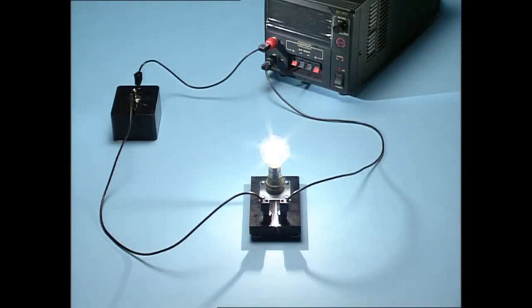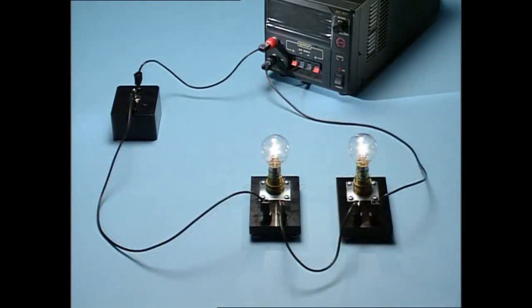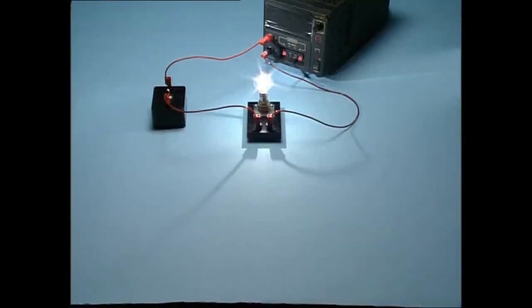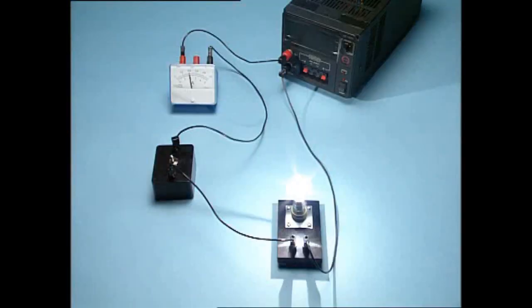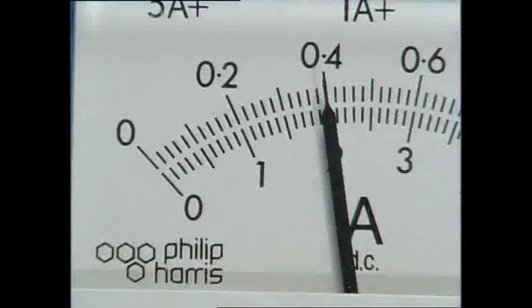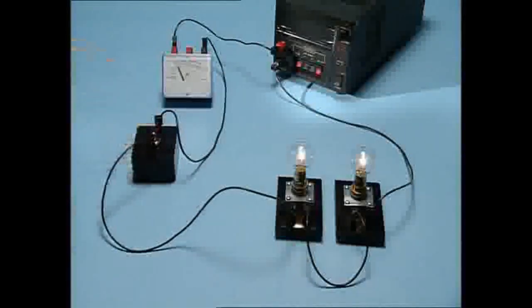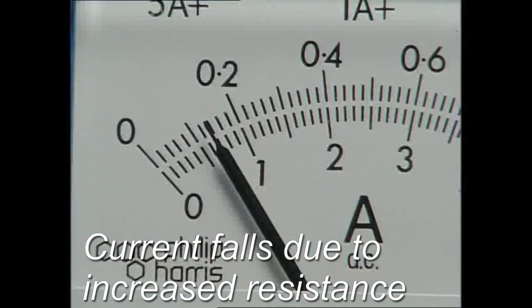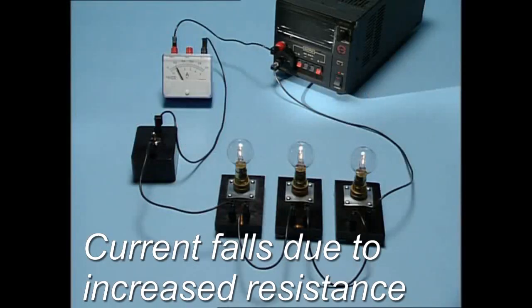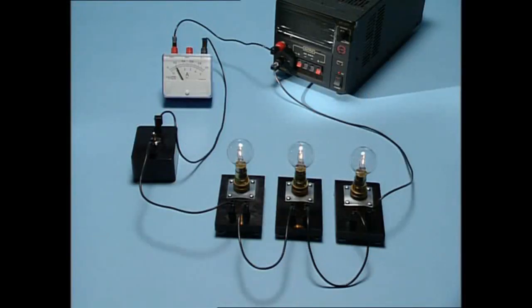In series, watch what happens to the brightness when more bulbs are added. To understand why brightness varies in the series circuit, we need to consider the current. With one bulb, the current is 0.4 amps. Add another bulb and see what happens to the current - the current is halved. Adding a third bulb reduces the current further. Bulb brightness depends on current. As the current falls, the bulbs get dimmer.